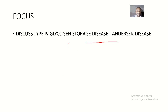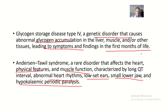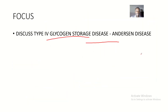That covers glycogen storage disease type 4, also known as Anderson's disease. I hope you've enjoyed this lecture — it's fairly straightforward. I'll see you in the next lecture on glycogen storage disease type 5.